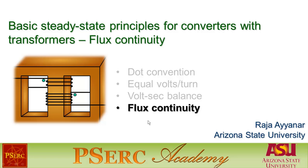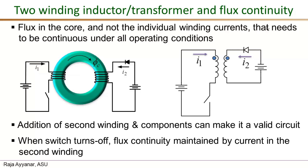Here we continue the flux continuity requirements for isolated converters. The flux continuity rule simply states that the net flux in the magnetic core should be continuous, because if there are any discontinuities or jumps in the flux waveform that would mean infinite voltages.